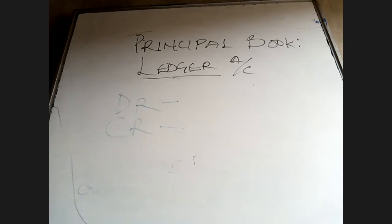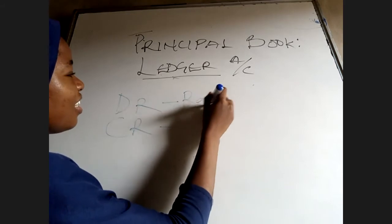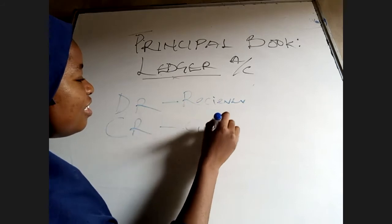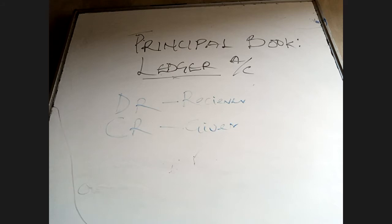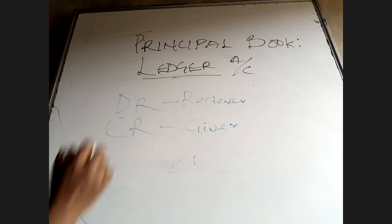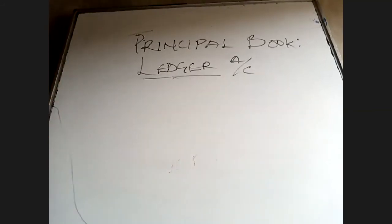Under your ledger account, the rule is: debit the receiver and credit the giver. This is the general rule of accounting - you debit your receiver and you credit your giver. For ledger accounts, by the end of the day you'll find out that you're still debiting the receiver and crediting the giver.